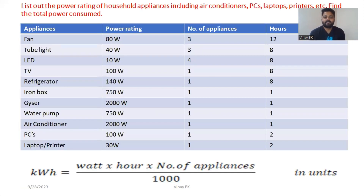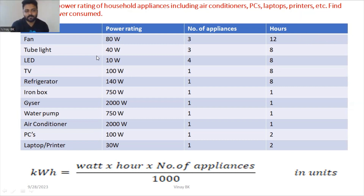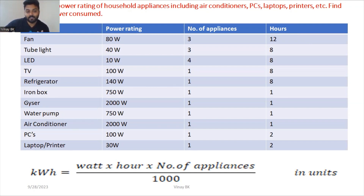The next question asks you to list out the power rating of household appliances including air conditioner, PC, laptop, and printer, and find the total power consumed. You need to calculate units consumed per day for all equipment and units consumed per month, then you can easily calculate the electricity bill. In a normal home you might use fans, tube lights, LEDs, TV, refrigerator, iron box, solar water heater, water pump, AC, PC, laptop, and printer.